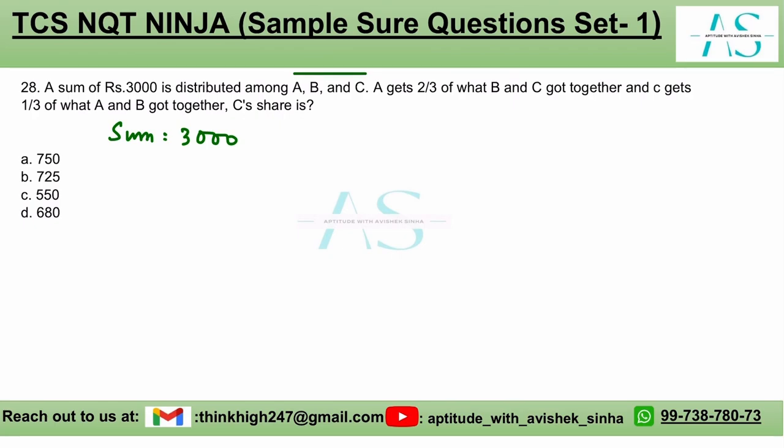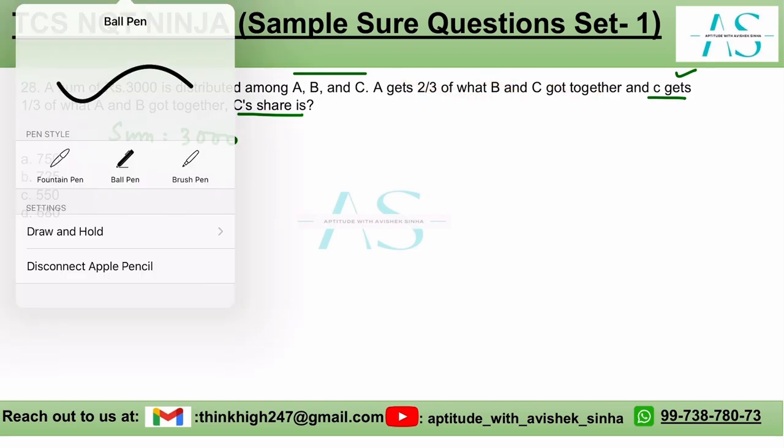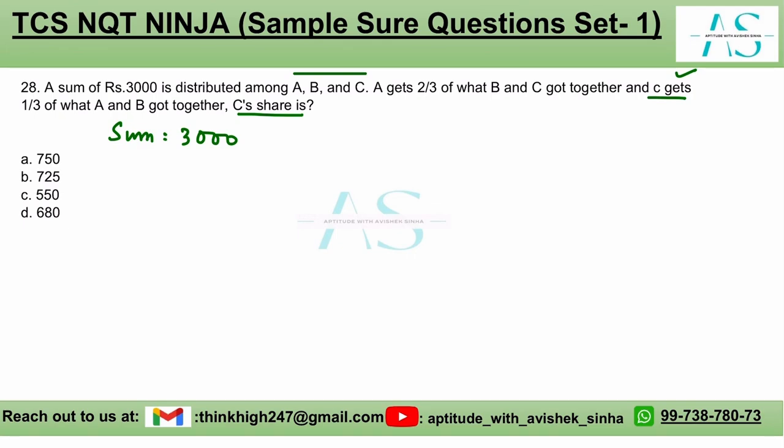What is that? If you look at the last line, it says C gets and here we need to find the value of C. Therefore, we are starting with this part and we are completely ignoring this part. However, C gets one third of what A and B got together. So if we talk about the share of C, it would be one third of A plus B.